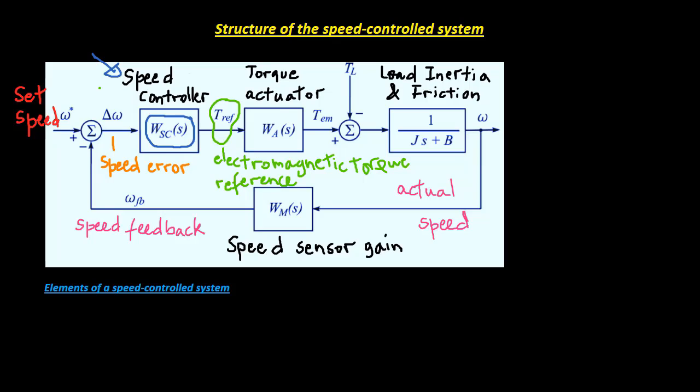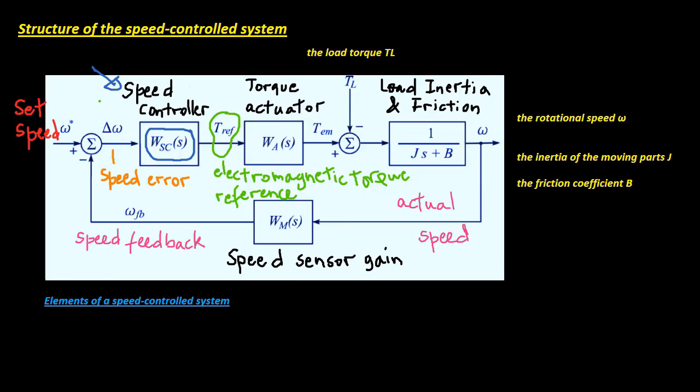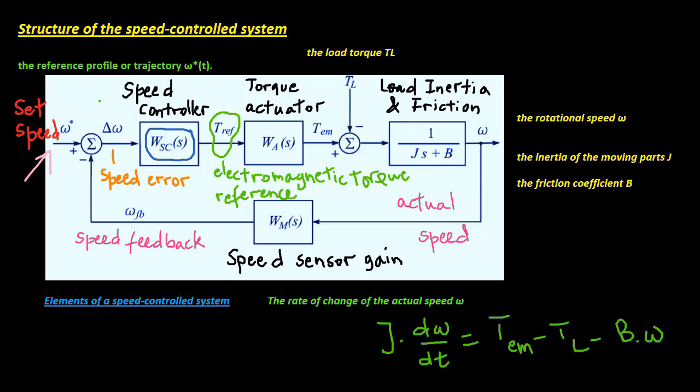Let us consider the system where the rotational speed is controlled with the inertia of the moving parts, the friction coefficient, and the load torque. So, this is the rate of change of the actual speed omega. The desired speed omega stern is referred to as the speed reference or the set point. When the desired speed changes in time, the speed reference change is called the reference profile or trajectory omega stern according to time.